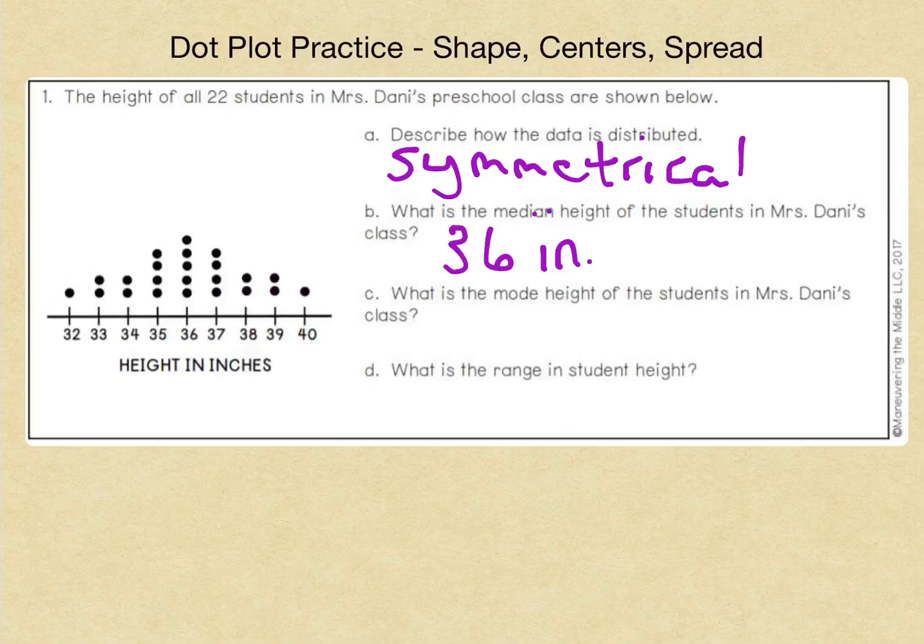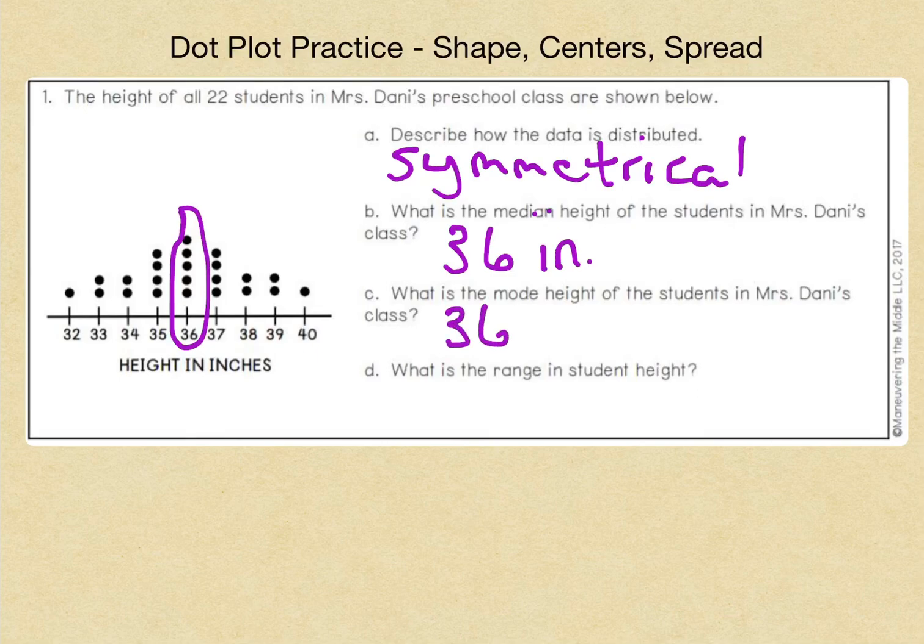Okay, our next question is C. What is the mode height of the students in Mrs. Danny's class? Now, remember, the mode means most here. So when we look at which number here has the most data points, we see that 36 also has the most. So the mode is 36 inches.